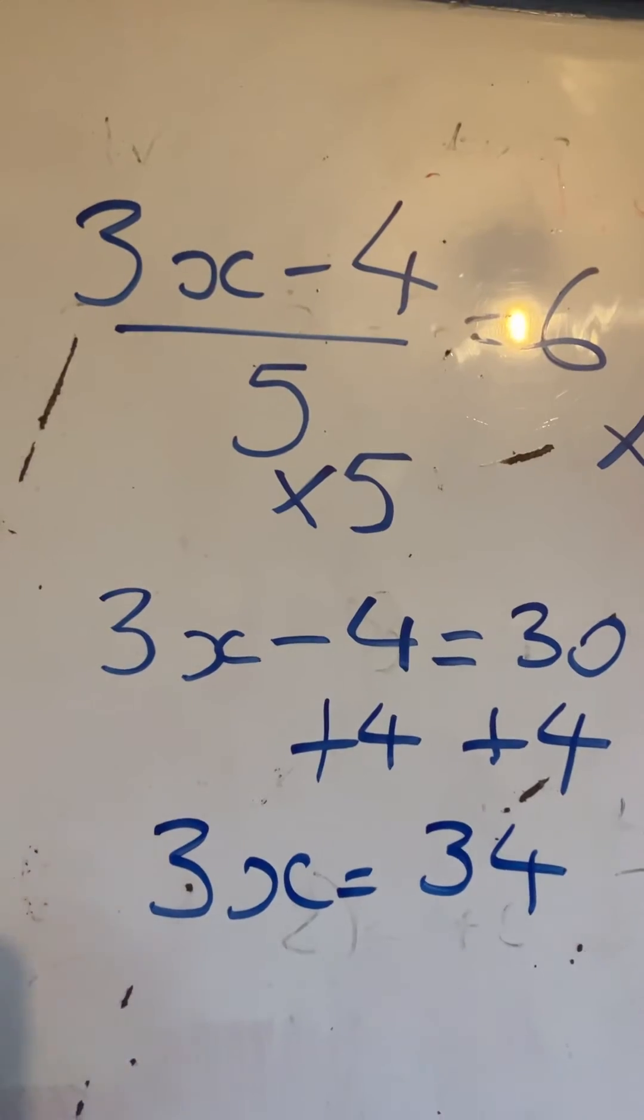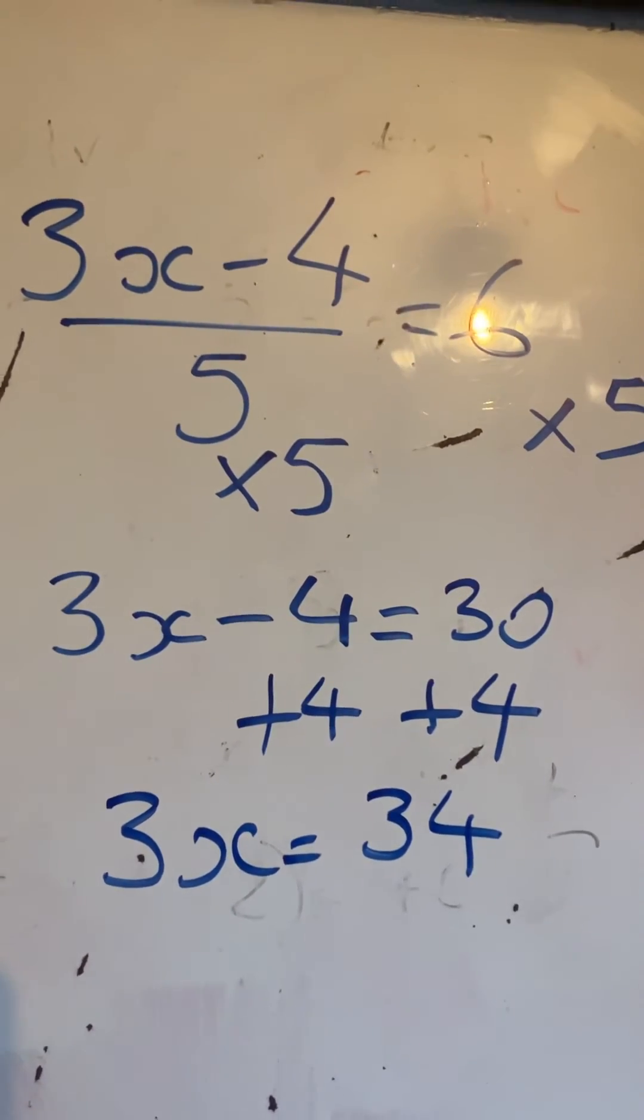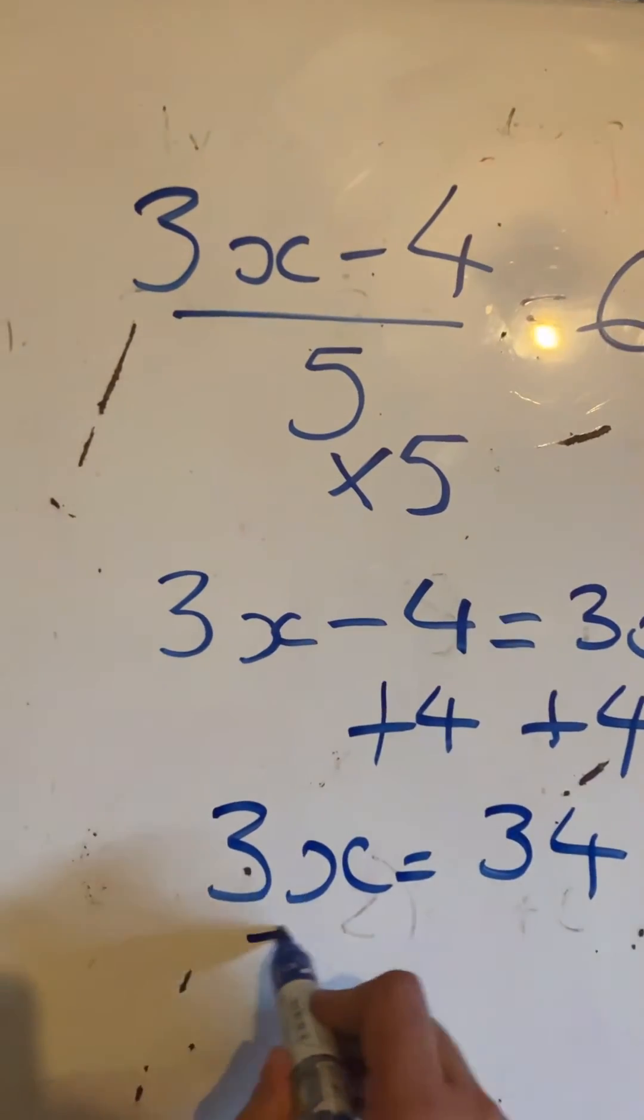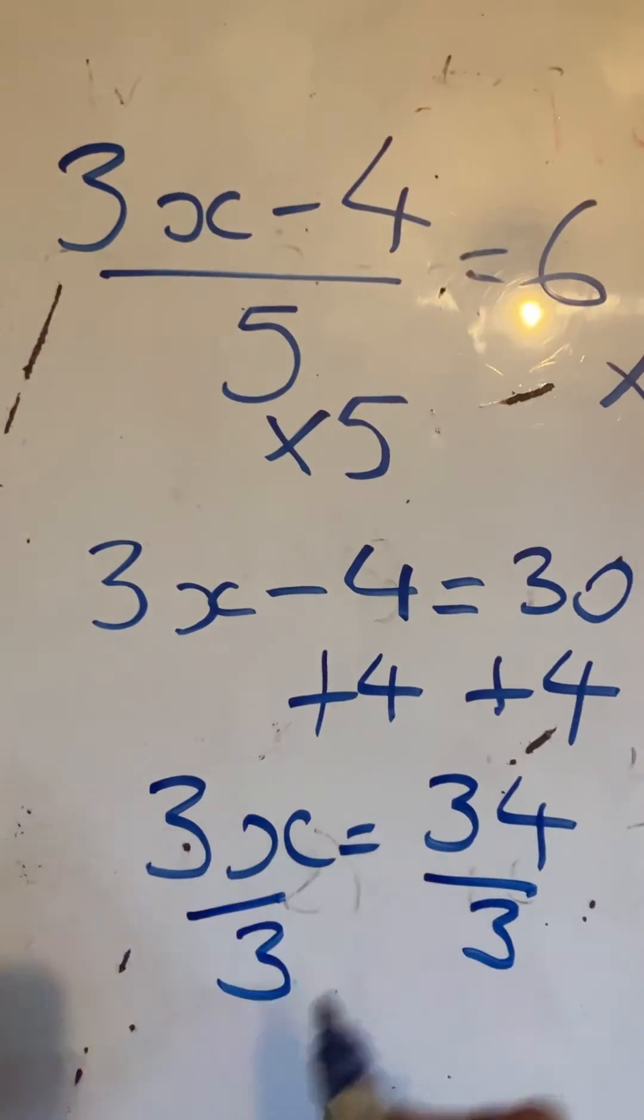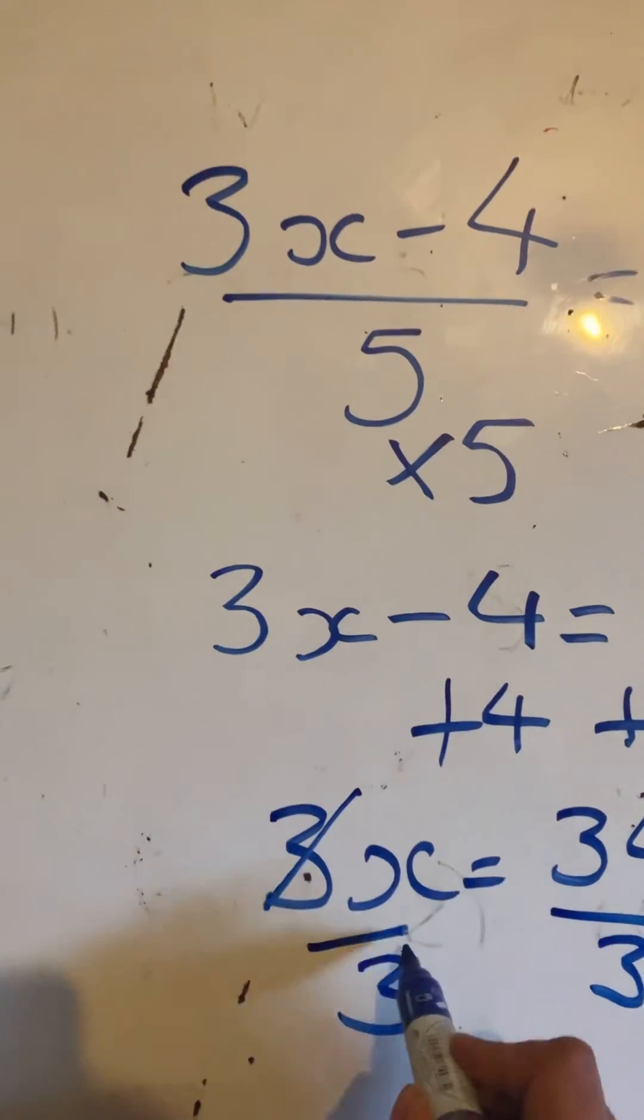3x means 3 times x, so the opposite will be to divide both sides by 3. Dividing both sides by 3, we're going to get 3x thirds is equal to 34 thirds, they cancel.